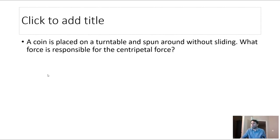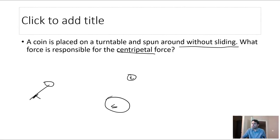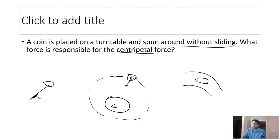Skipping one. A coin is placed on a turntable and spun around without sliding. What force is responsible for the centripetal force? Centripetal just means the direction — it's not a type of force. For a ball on a string, tension provides centripetal force. For a planet orbiting the sun, gravity does. For a car around a curve, friction does. In this case, a coin on a turntable — there's no tension, gravity isn't relevant here. It's friction, specifically static friction, since the coin isn't sliding.